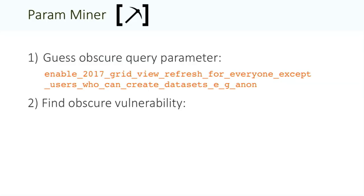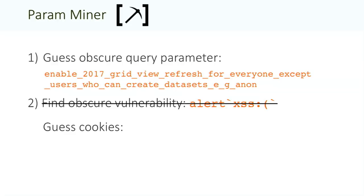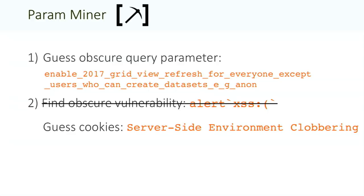But the next step just went horribly wrong. The most interesting thing I could find in these query parameters that was actually serious, over and over, was boring old reflected cross-site scripting, which is not something I really want to give a talk about. So I thought, maybe all the cool vulnerabilities are actually hiding in cookies. I hacked up my code to guess cookie names as well, set it running, and found something that looked super promising. But about eight hours later, I got absolutely nowhere and had to admit that was a waste of time as well.